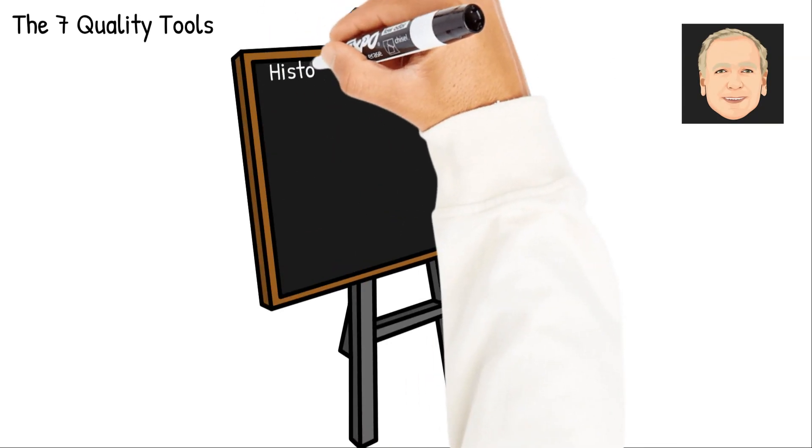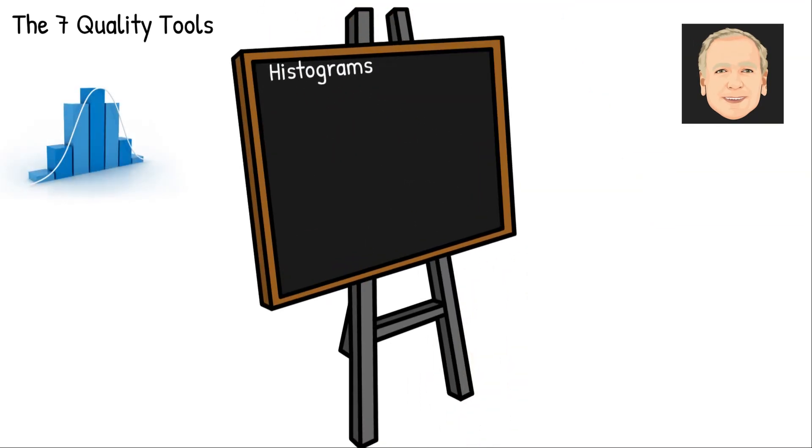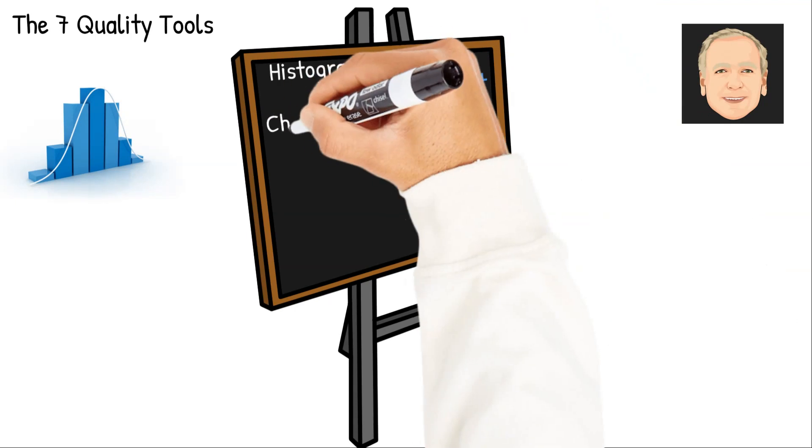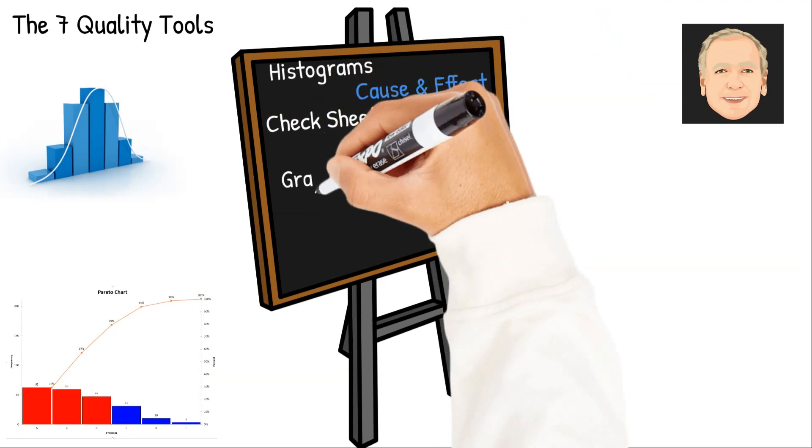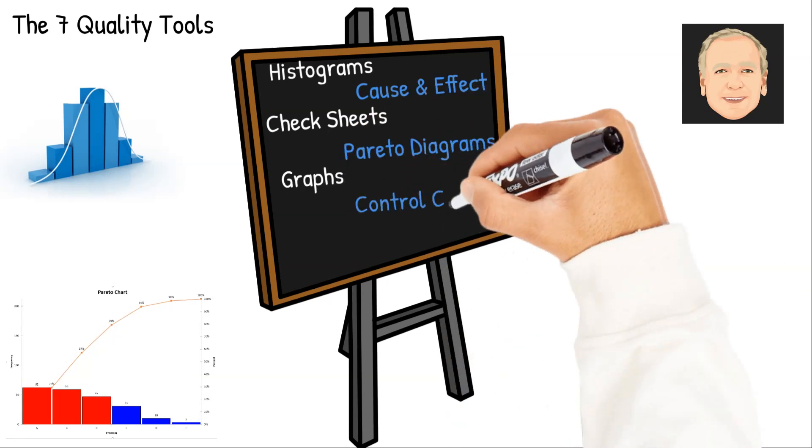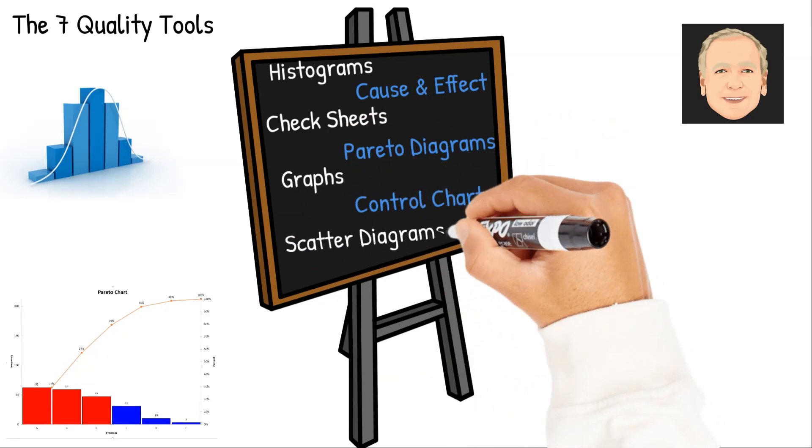So here we're going to look at the seven quality tools. What are those? The histogram, cause and effect diagram, check sheets, Pareto diagrams, graphs, control charts, and finally scatter diagrams.